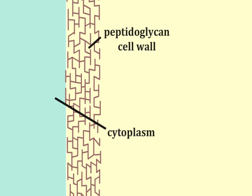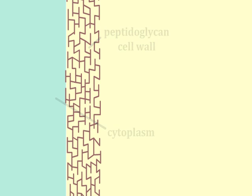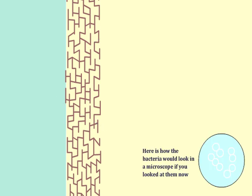The circle at the lower right tracks how the bacteria would appear in the microscope if they were examined during each step of the staining procedure. Prior to staining, the bacteria would be transparent and invisible in the microscope.